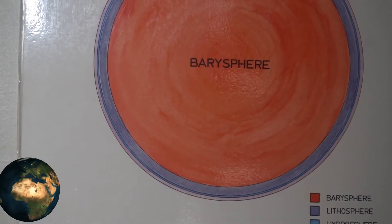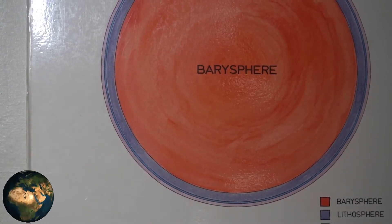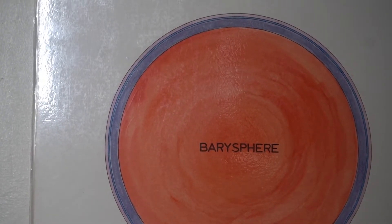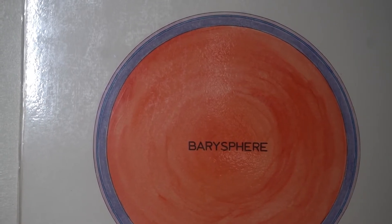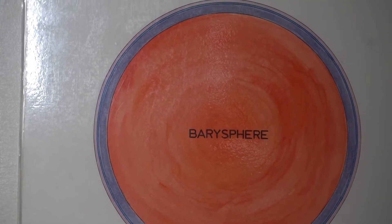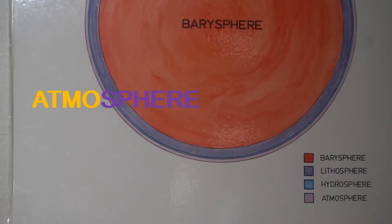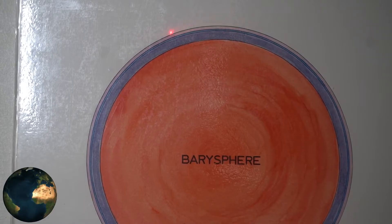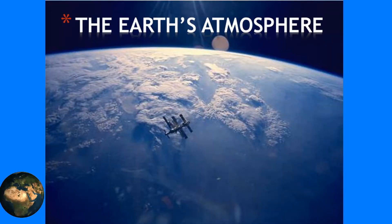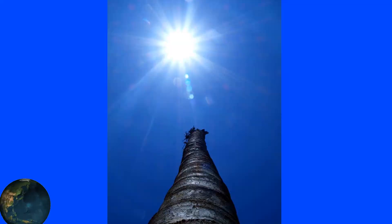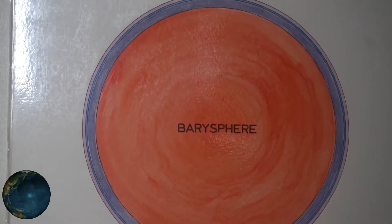Now, there's still a thinner layer after the hydrosphere. That part is called the atmosphere. And it's still lighter — lighter than the hydrosphere. That's why it's right on top of the hydrosphere. The air that is all around us is the atmosphere. 'Atmos' is a Greek word that means vapor.